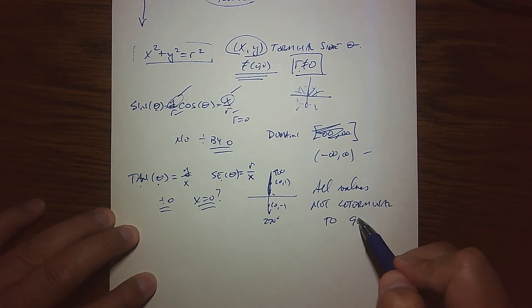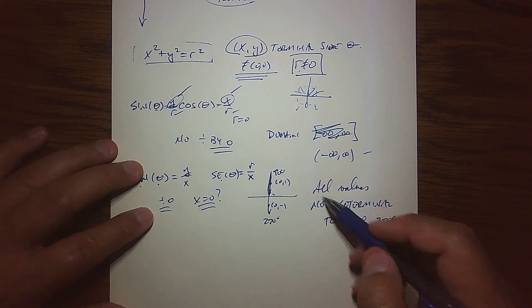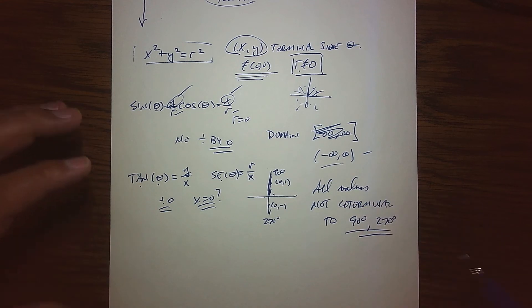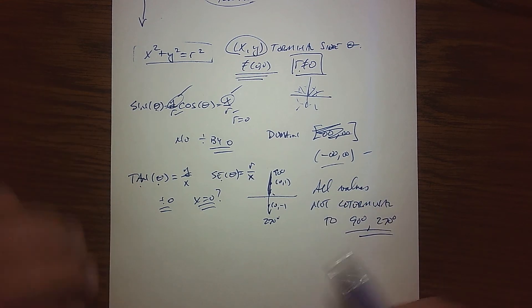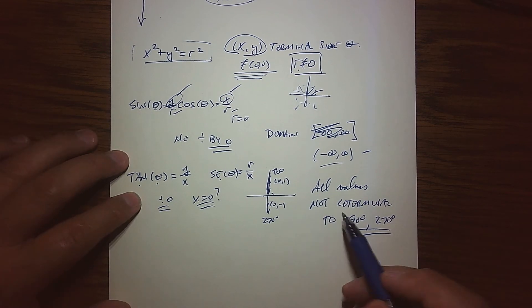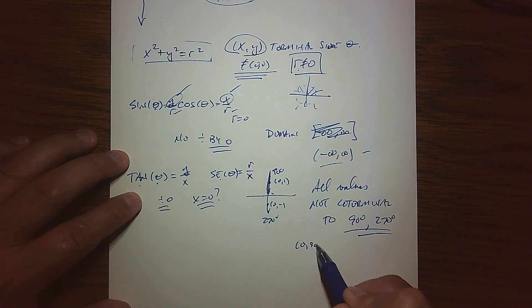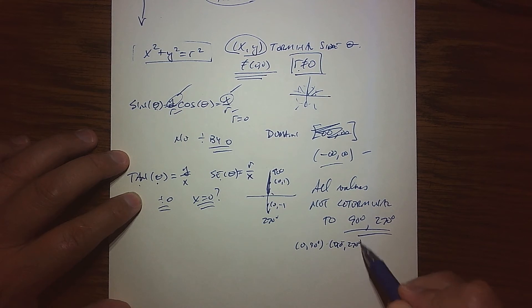So all values not co-terminal to 90 degrees and 270 degrees. That would probably be the best way to describe that. Of course there's a lot of intervals we can say, but I'll just kind of leave it at that. We'll refine this concept a little bit later, but there are several intervals.